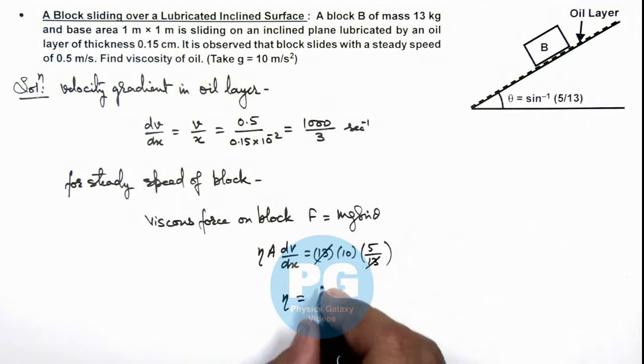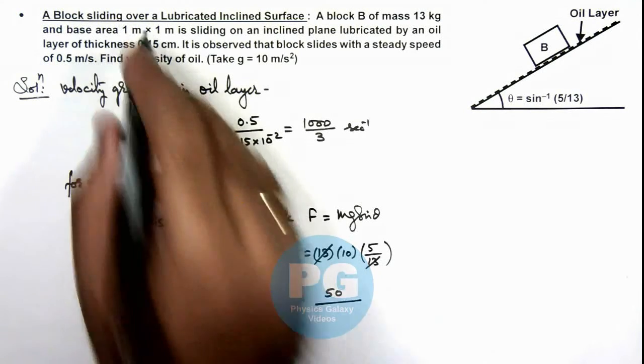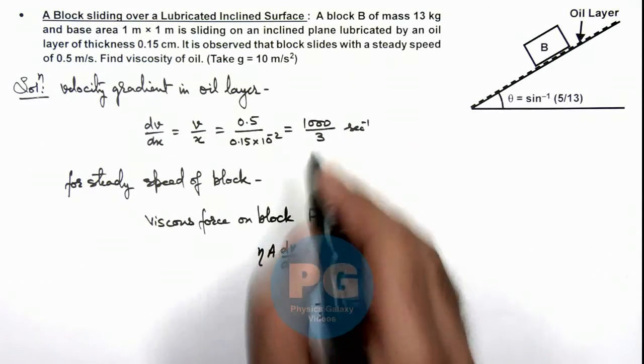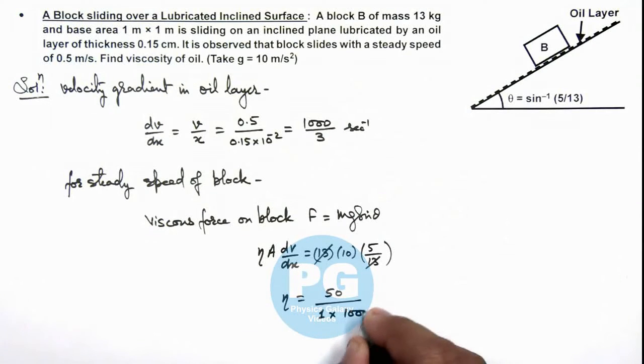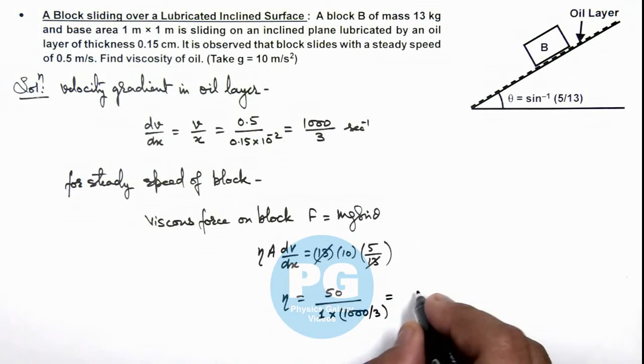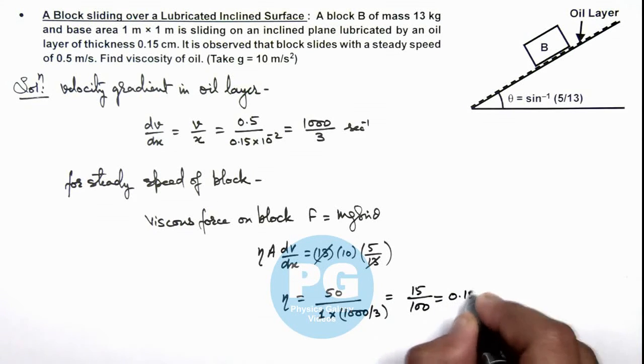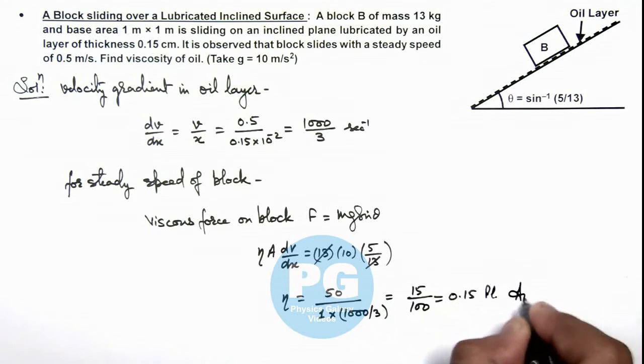Divided by area—area is given as 1 meter square—multiplied by dv/dx. Here we can substitute what we have calculated as 1000/3. So when we solve it numerically, this will give us 15/100, and that will be 0.15 poise. That is the result of this problem.